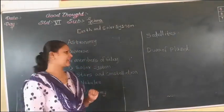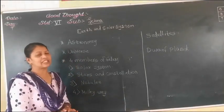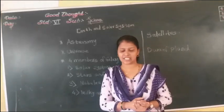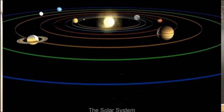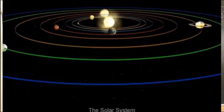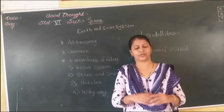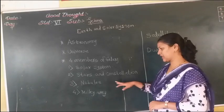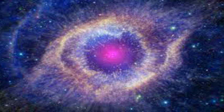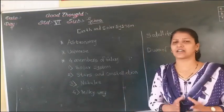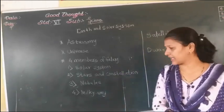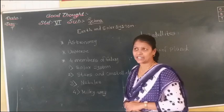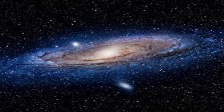There are four main members in a galaxy. First, the Solar System, which we learnt about in the last video — it consists of eight planets. Second, stars — if you look at night, you can see a number of stars in the sky. Third, constellations. Fourth, nebula, which is a new concept. A nebula is a very bright star which looks blue or whitish in color. And the Milky Way is the galaxy we live in.